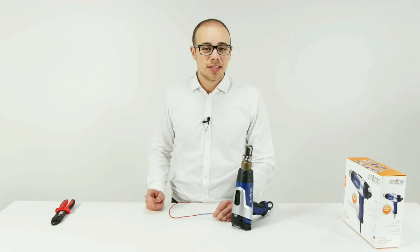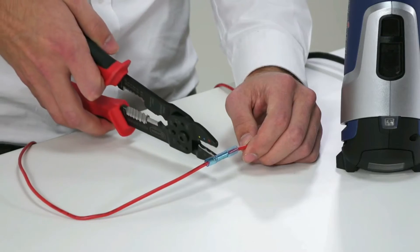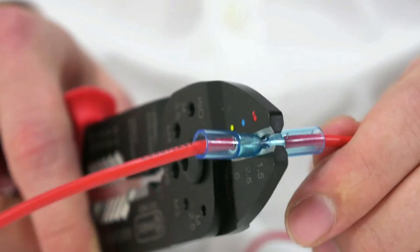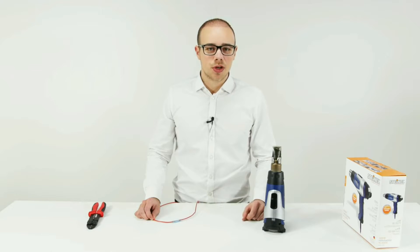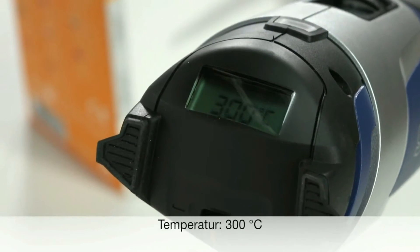Once that is fitted, we take the crimp connector and press it at the center with the tool. Once that is done, we take this to the heat gun after setting it at 300 degrees Celsius.